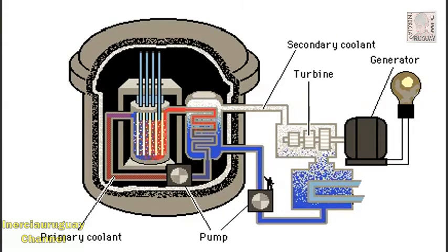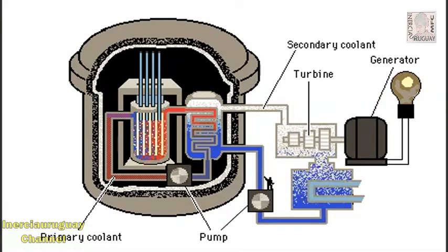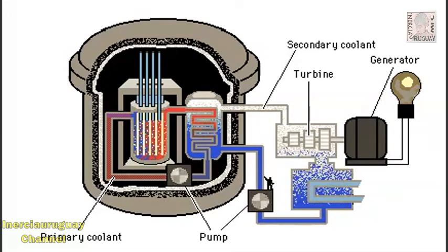In the secondary loop, water converted to steam in the heat exchanger is fed under pressure to turn turbine generators.